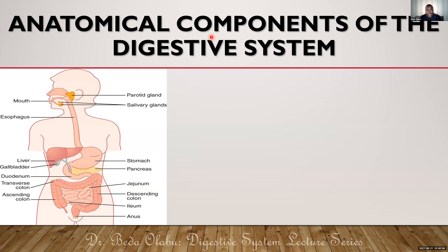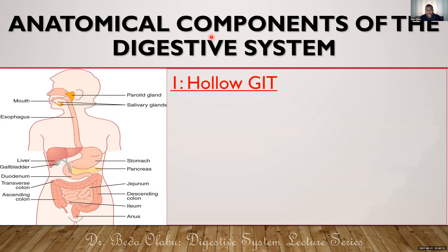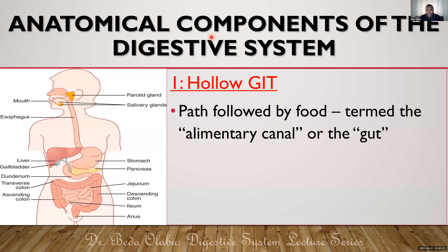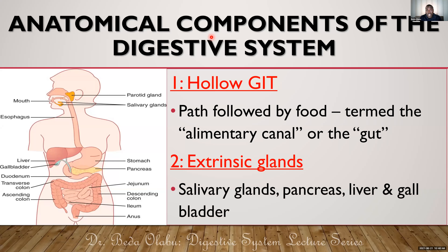We divide the components of the digestive system anatomically into two categories. We have what we call the hollow GIT, which is basically the path that is followed by food — sometimes called the gut or the alimentary canal. But we also have what we call the extrinsic organs of the digestive system, which refer to those organs not necessarily within the wall of the GIT but that provide their secretions into the lumen of the GIT.